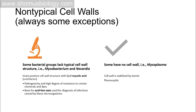Some bacterial groups lack a typical cell wall structure, such as Mycobacterium and Nocardia. These have a gram positive-type cell wall structure but with lipid mycolic acid — also known as the cord factor — instead of typical peptidoglycan components. They exhibit high pathogenicity and resistance to certain chemicals or dyes. Because of this, they cannot be identified by gram staining; instead, acid-fast staining must be used.